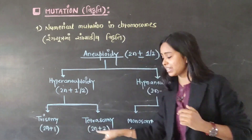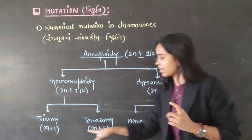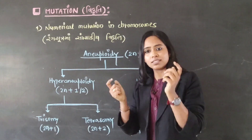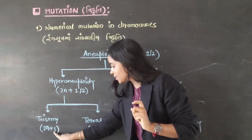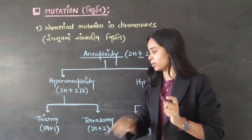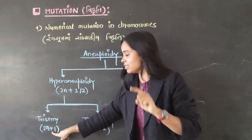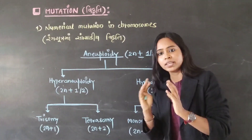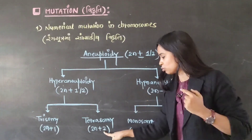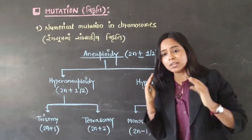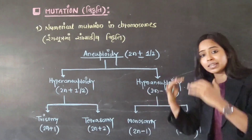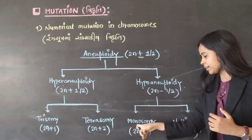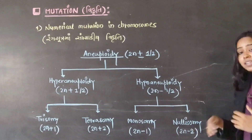Hyper-aneuploidy is divided into two types: the first one is Trisomy and the second one is Tetrasomy. Tri means 3 — if the original cell has two chromosomes in any set and we add one, 2 plus 1 equals 3, that is the reason the name Trisomy has been given. If the original cell is 2N and we add 2 chromosomes, then we call it Tetrasomy. For Hypo-aneuploidy, if the original cell is 2N and one chromosome is deleted, we call it Monosomy. If two chromosomes are deleted, then it will be Nullisomy.